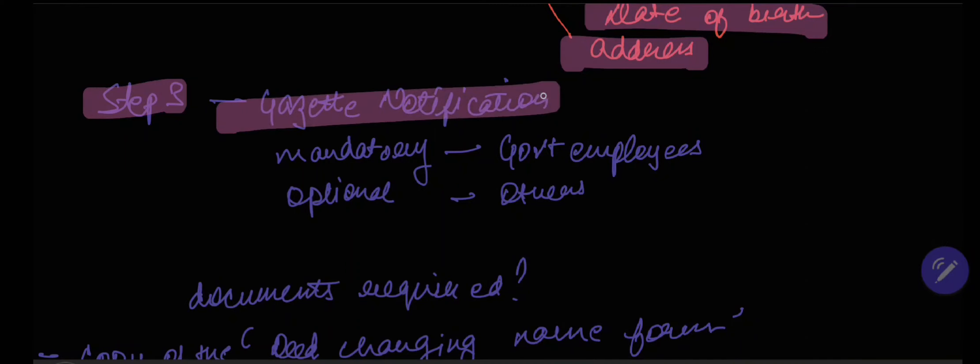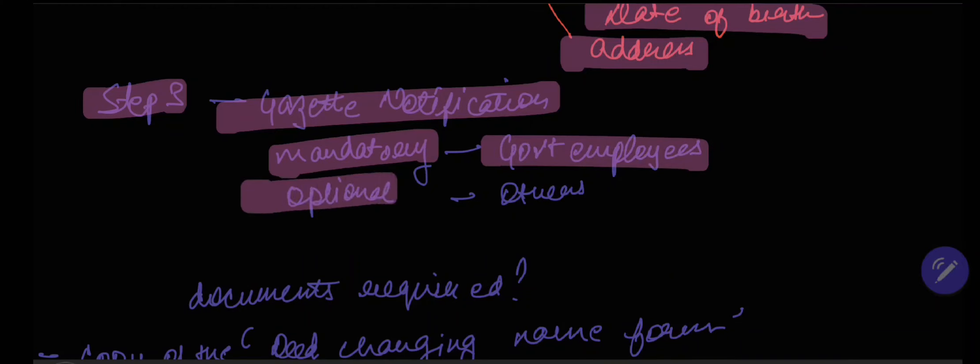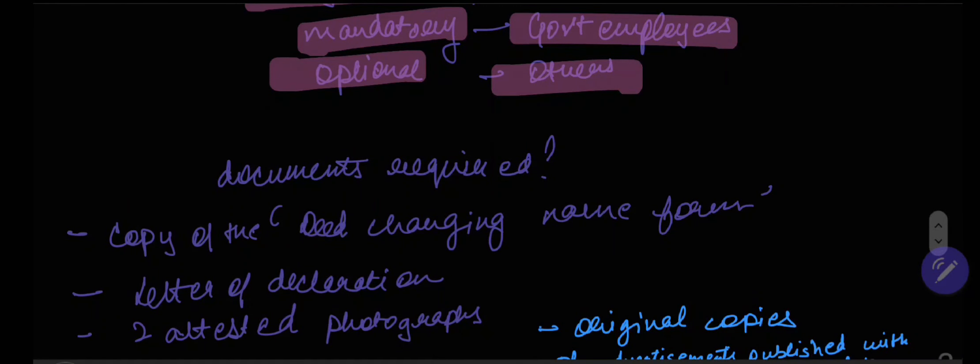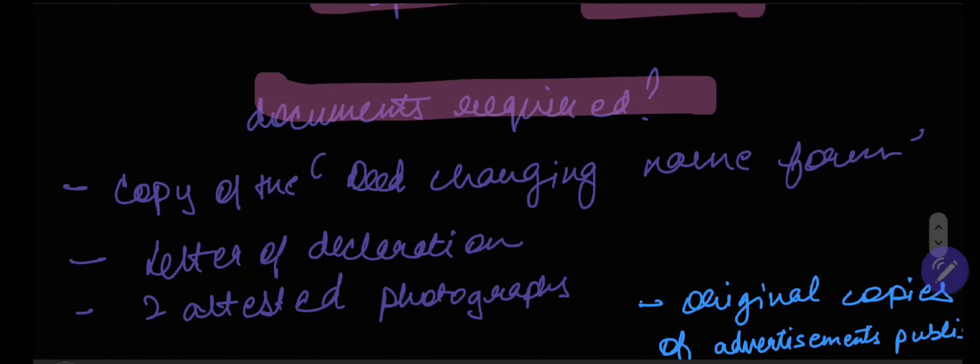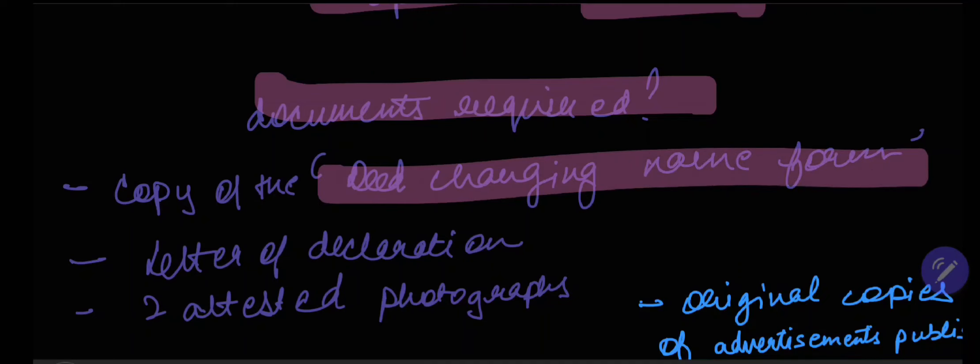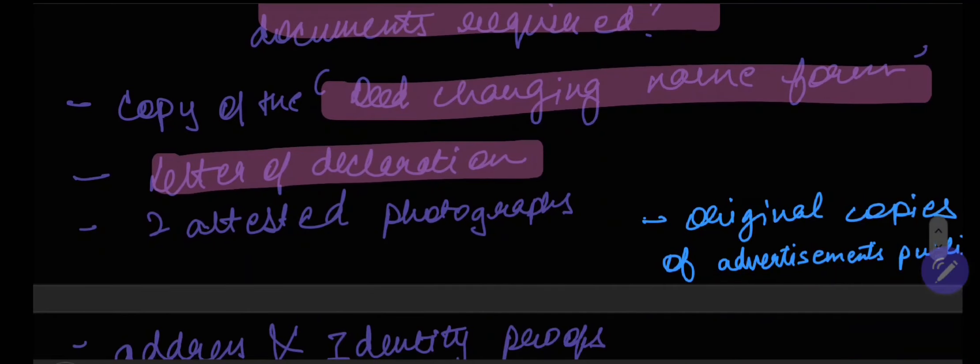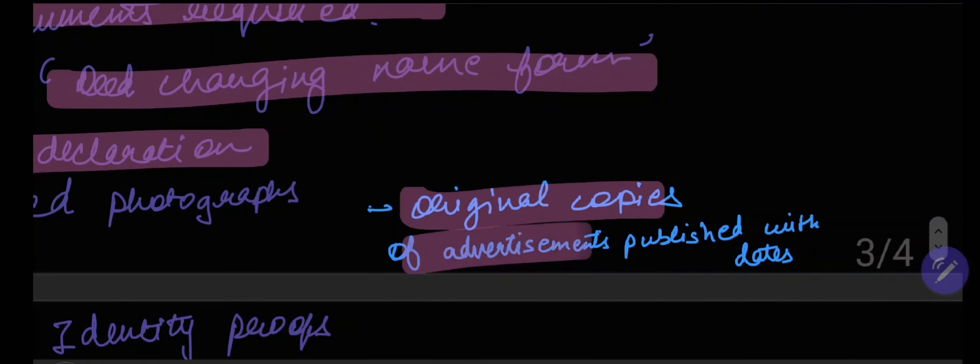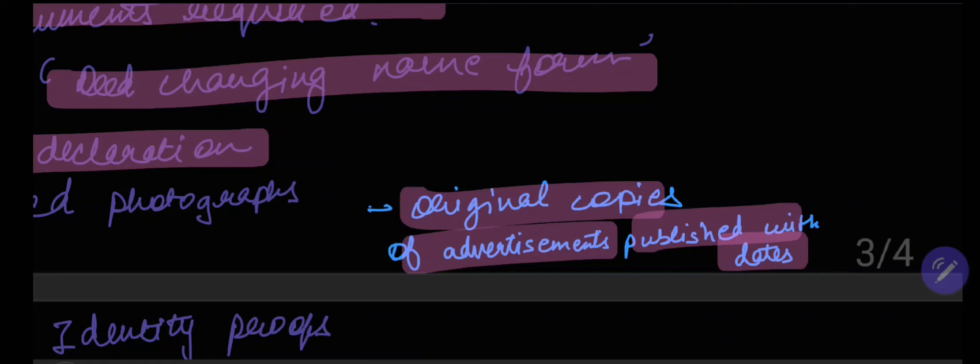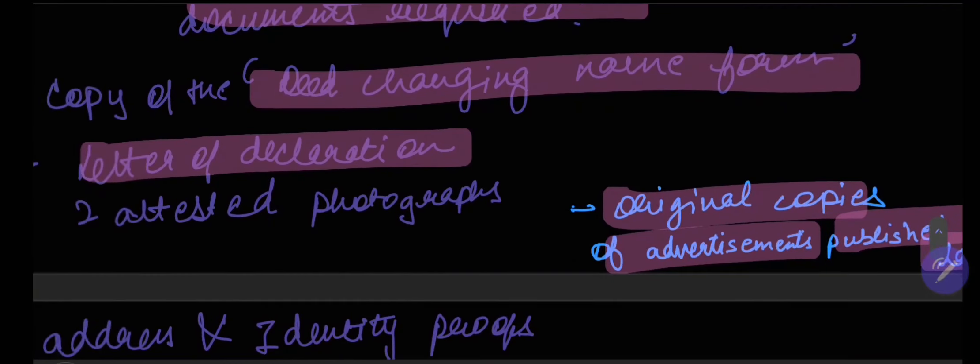Step three, or stage three, is the gazette notification. It is mandatory for government employees and optional for others. What are the documents required? The documents required include a copy of the date changing name form, which is available with the controller of publication, department of publication, and you need to have a letter of declaration from you stating the need for changing the name. You need to have the original copies of advertisements published with dates. Published where? Published in the newspaper. Original copies.